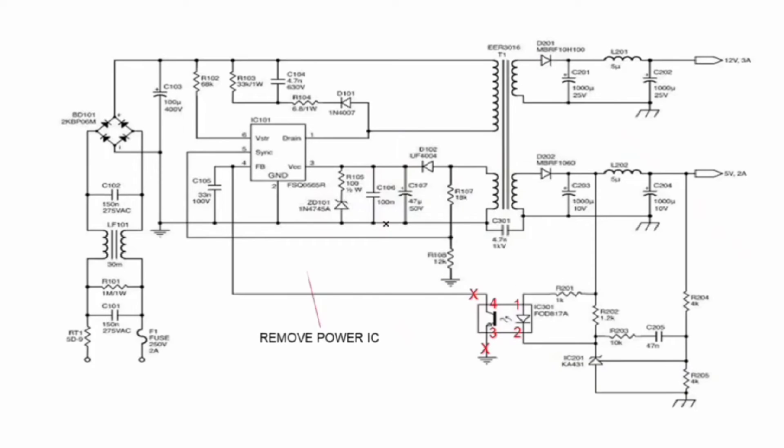Remove the power IC. Then cut the circuit pin 3 and 4 of the optocoupler IC, or hang pin 3 and 4 in the circuit.